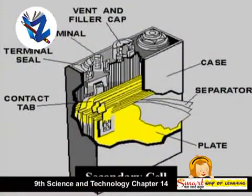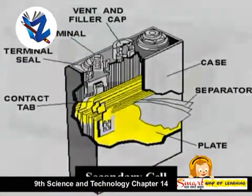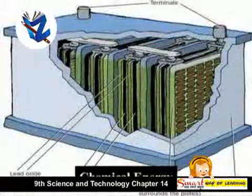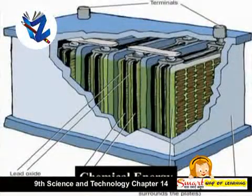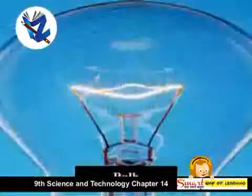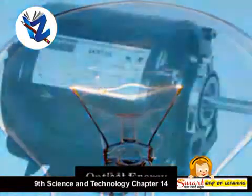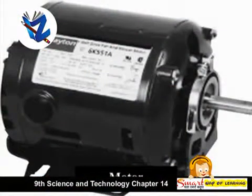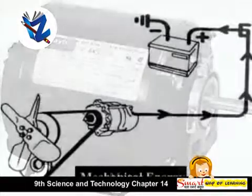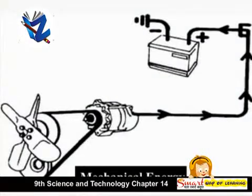We can use the secondary cell to produce chemical energy. We use the bulb to produce optical energy. We use a motor or fan to convert electrical energy into mechanical energy.